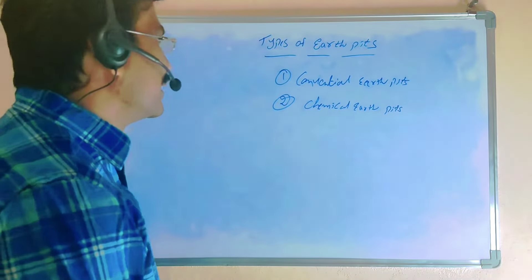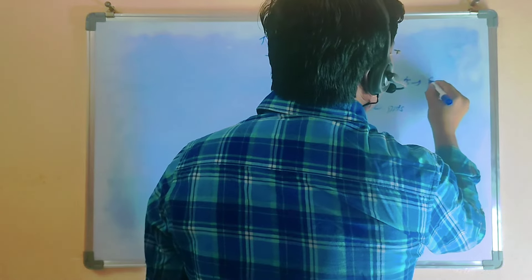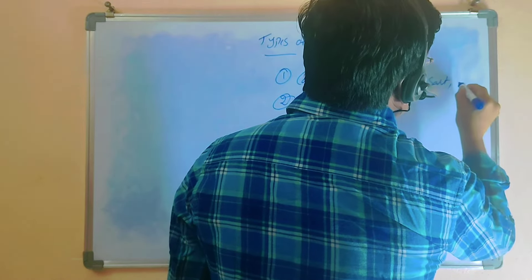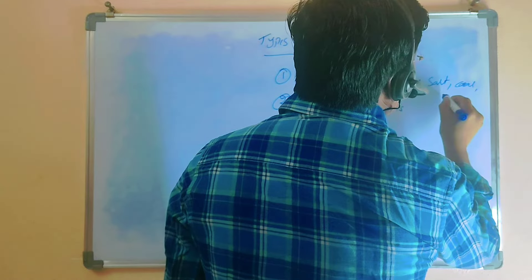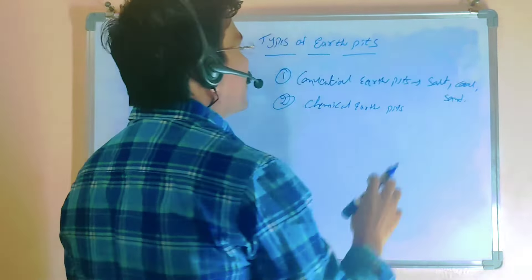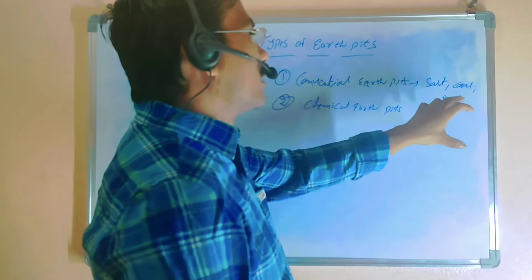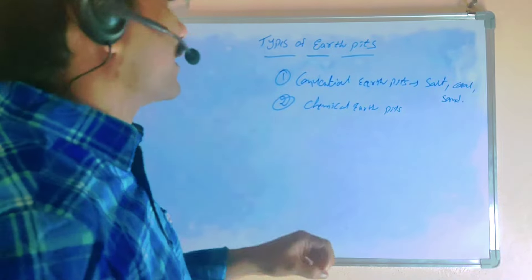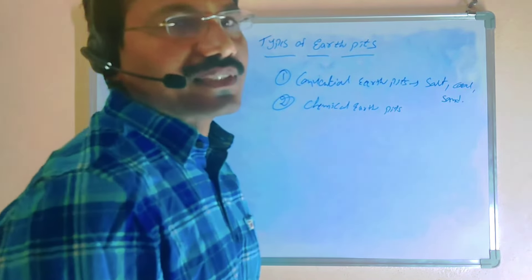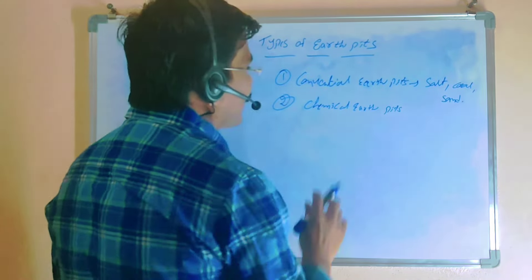For conventional earth pits, we are using salt and coal. Somewhere we are also using sand — mixing up both. Using that mixture, conventional earth pits are filled. Those types of earth pits are called conventional earth pits.